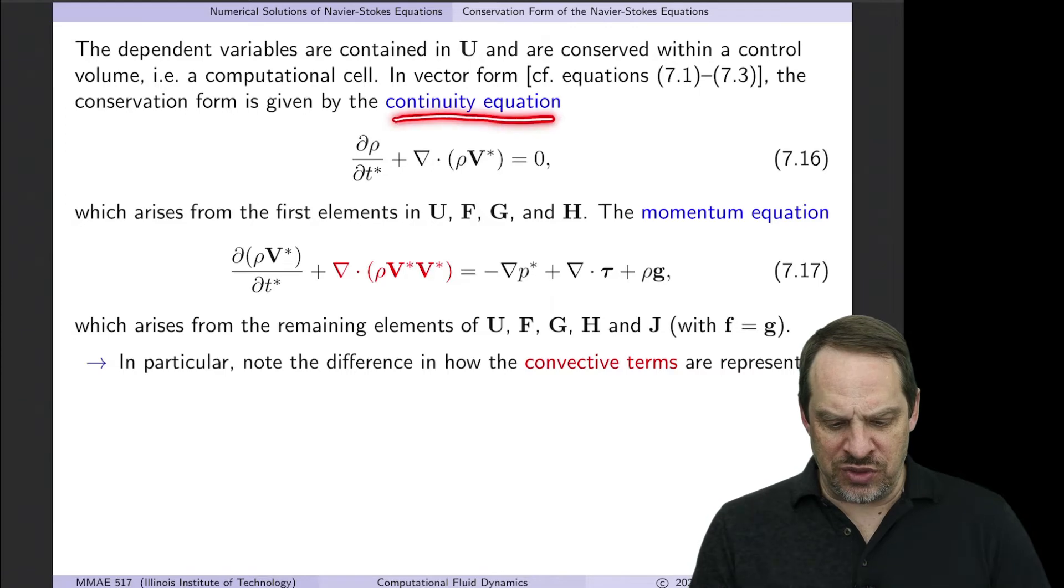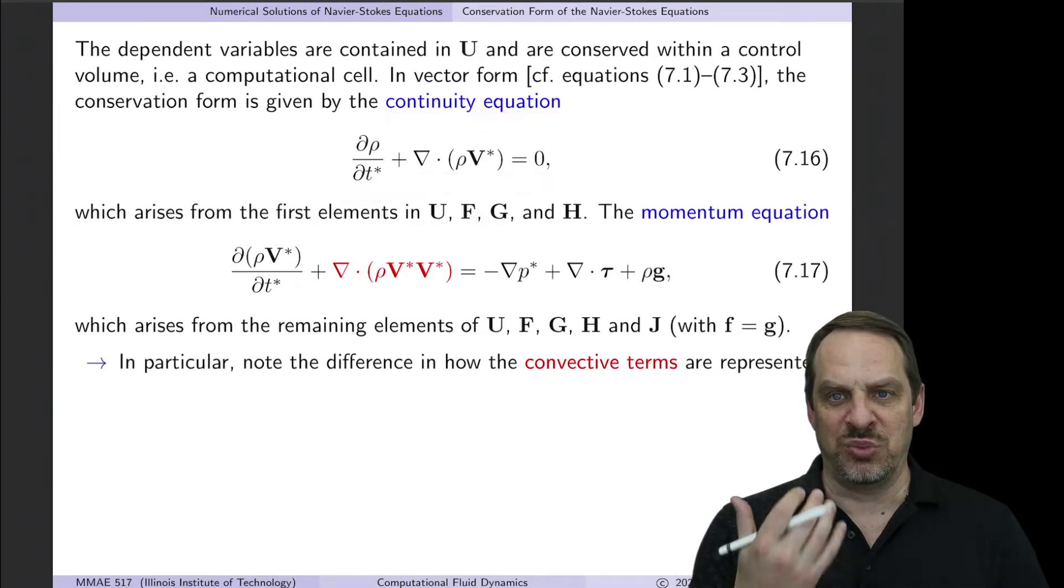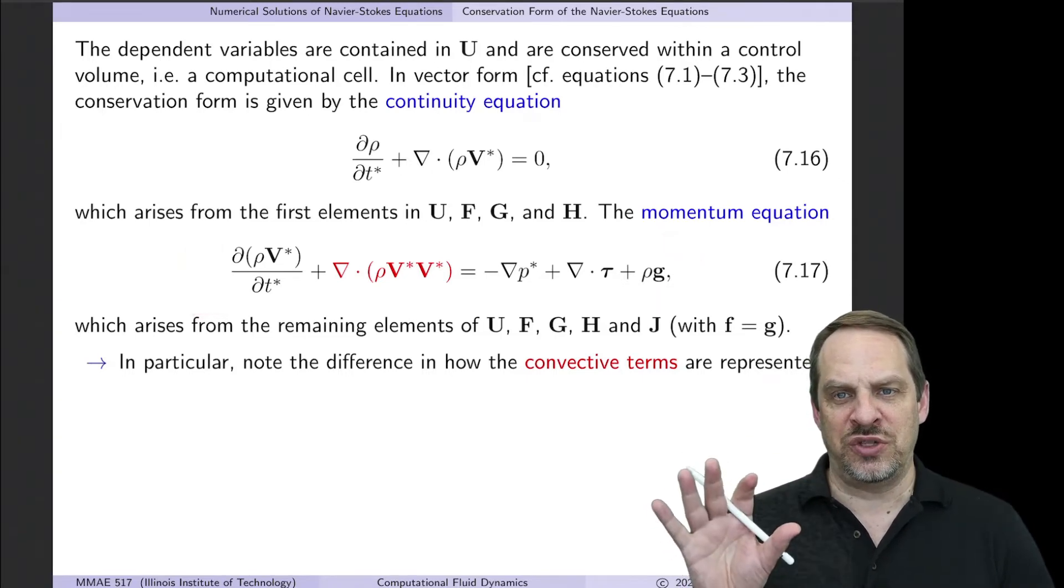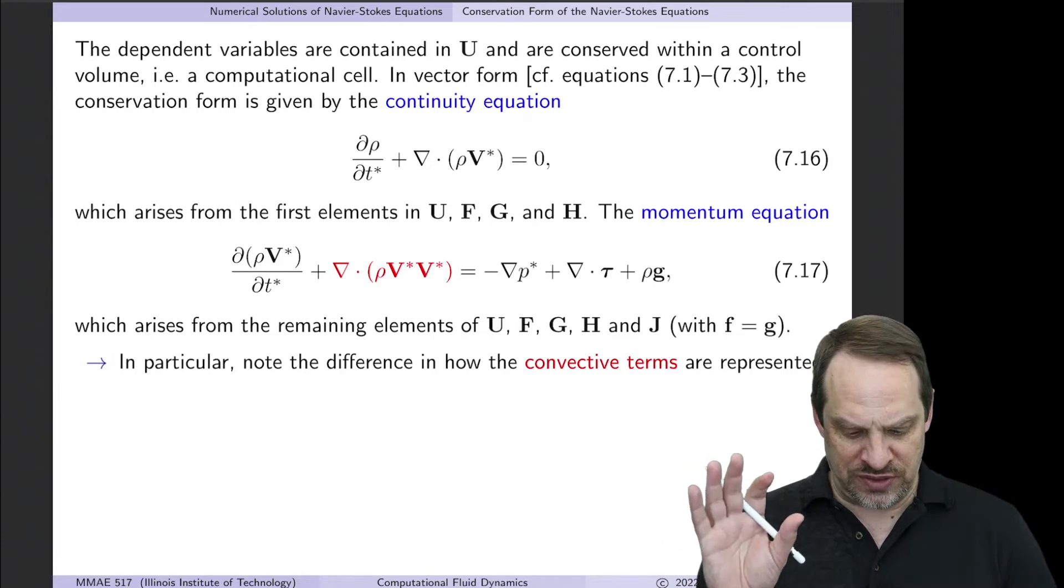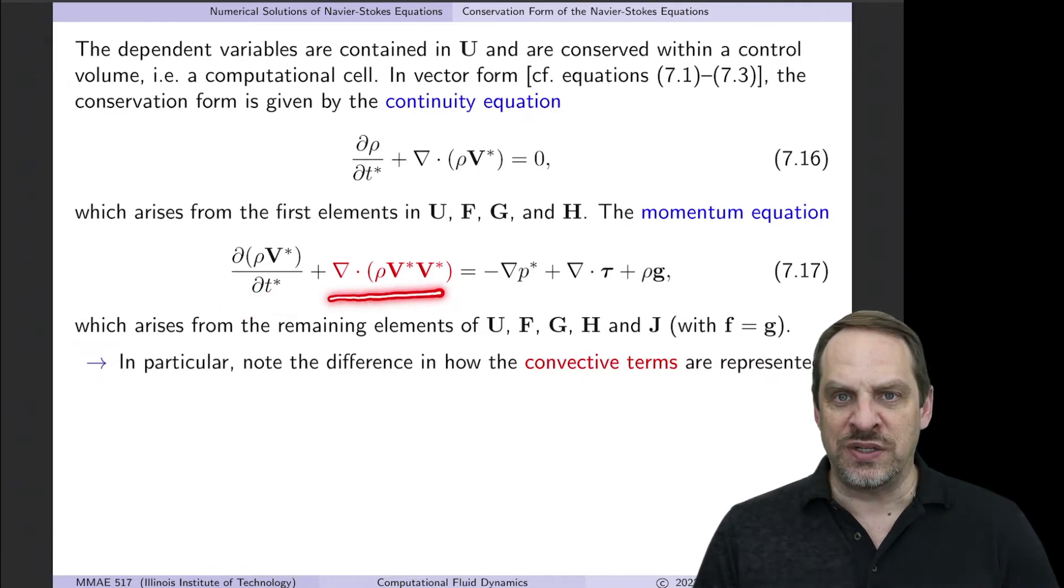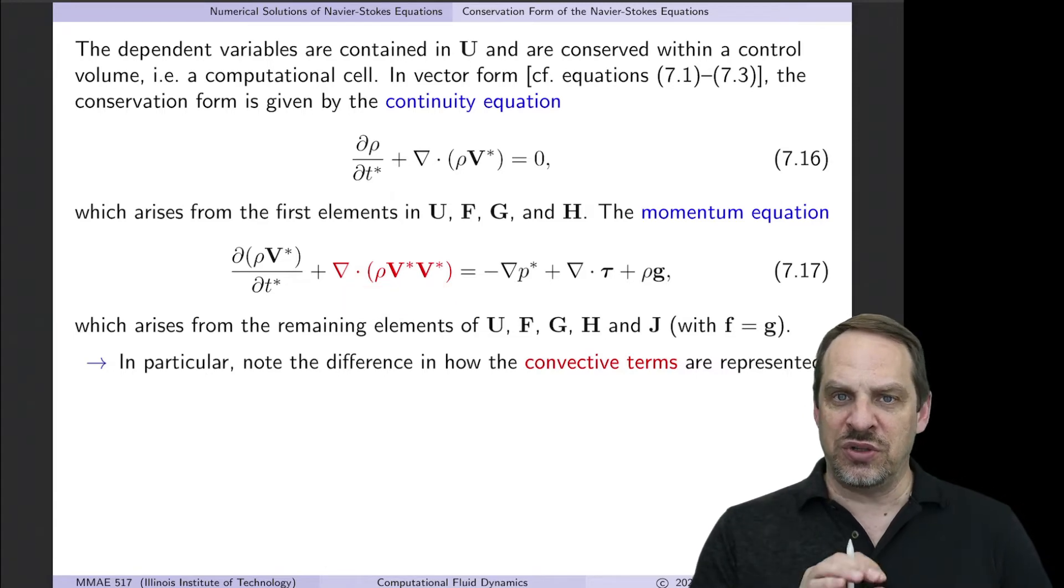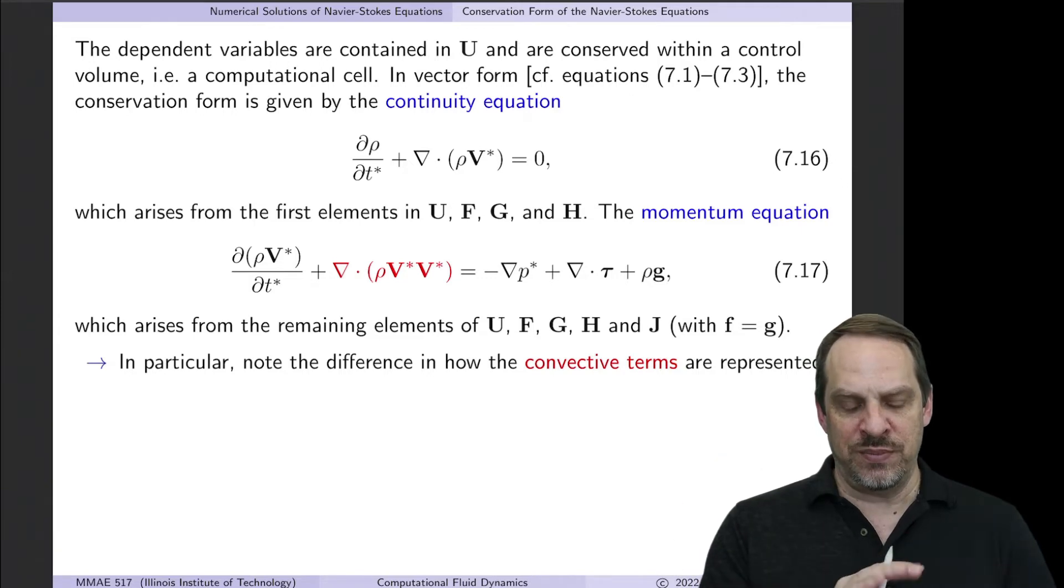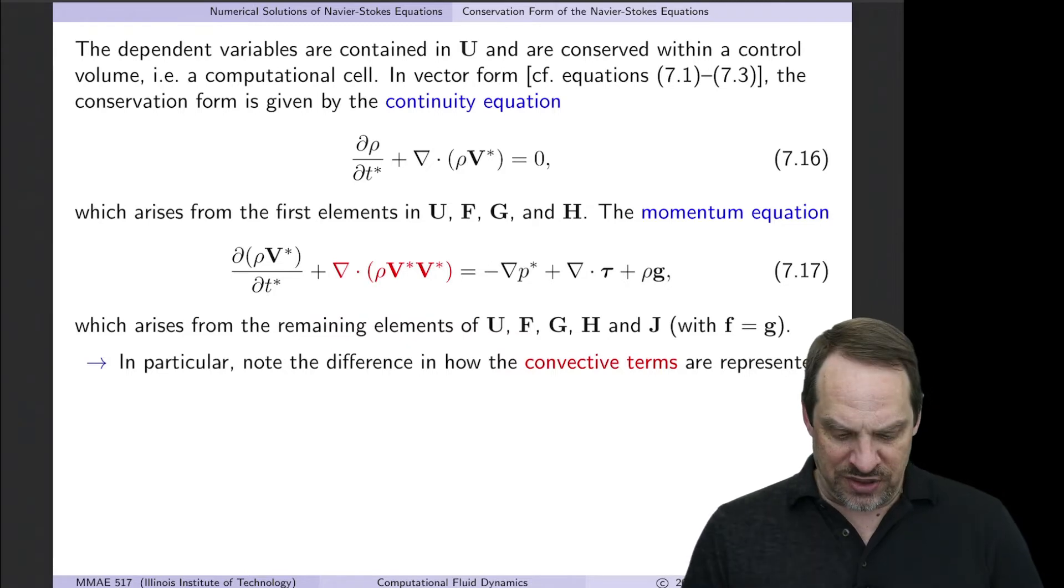So again, that's the continuity equation enforcing conservation of mass for our compressible fluid. The momentum equation is given here. It looks somewhat similar to the momentum equation we had earlier for the incompressible case, but I'll point out some differences. So here's the unsteady term. Then we have ∇·(ρV×V). So this is the rest of the convection terms, but it looks different than what we had in the incompressible case. There we had V·∇V. Here we have ∇·(ρ×V×V).